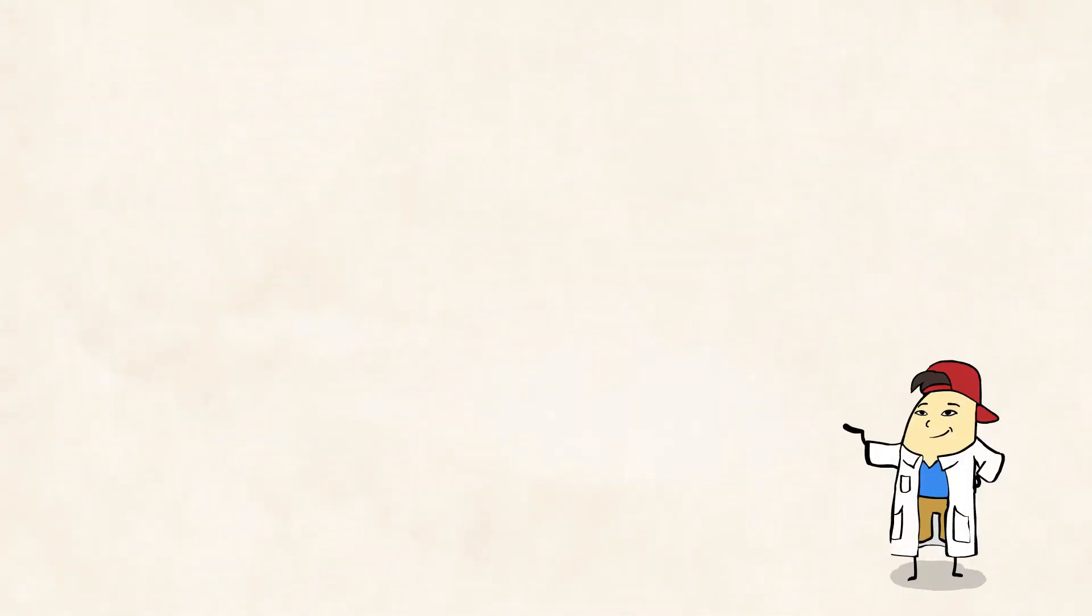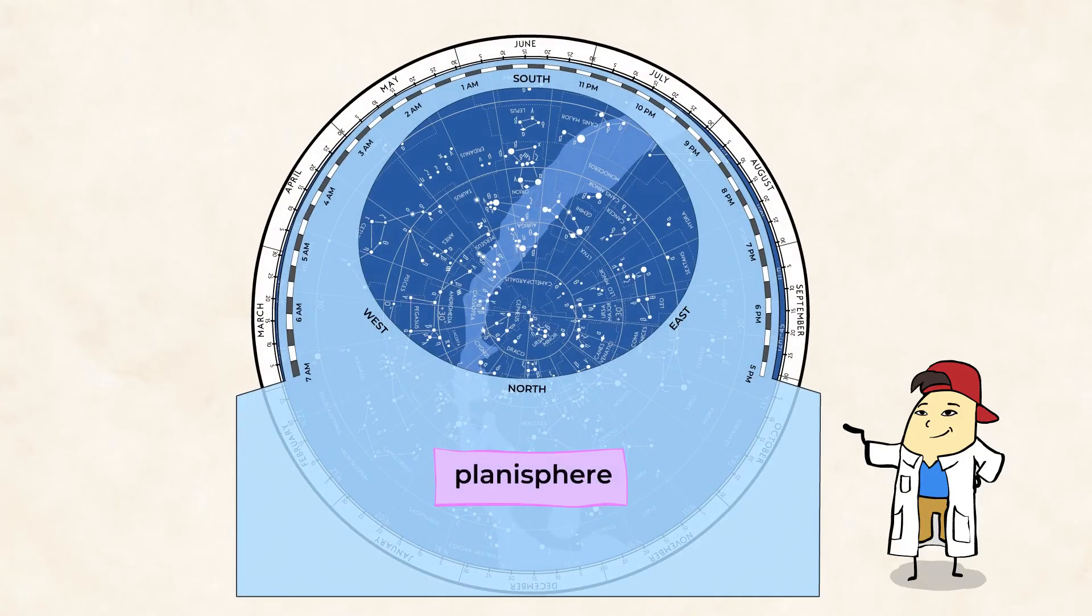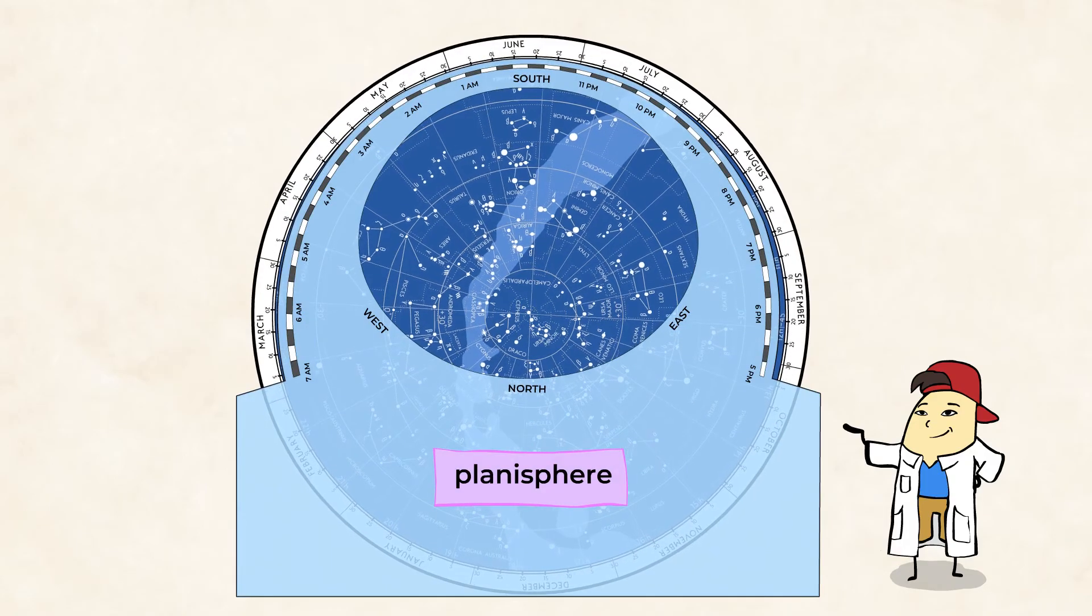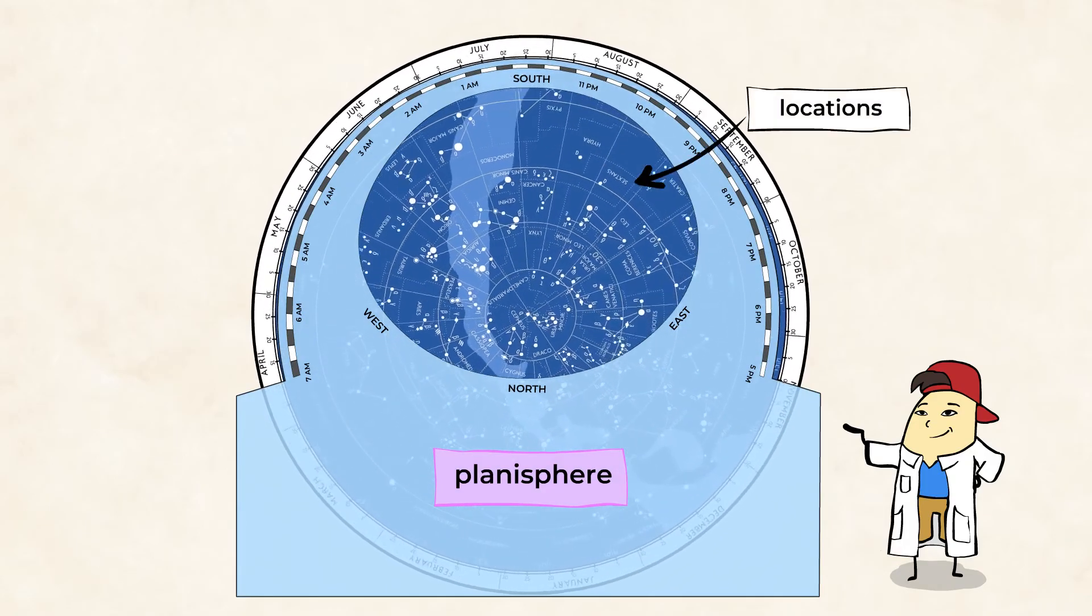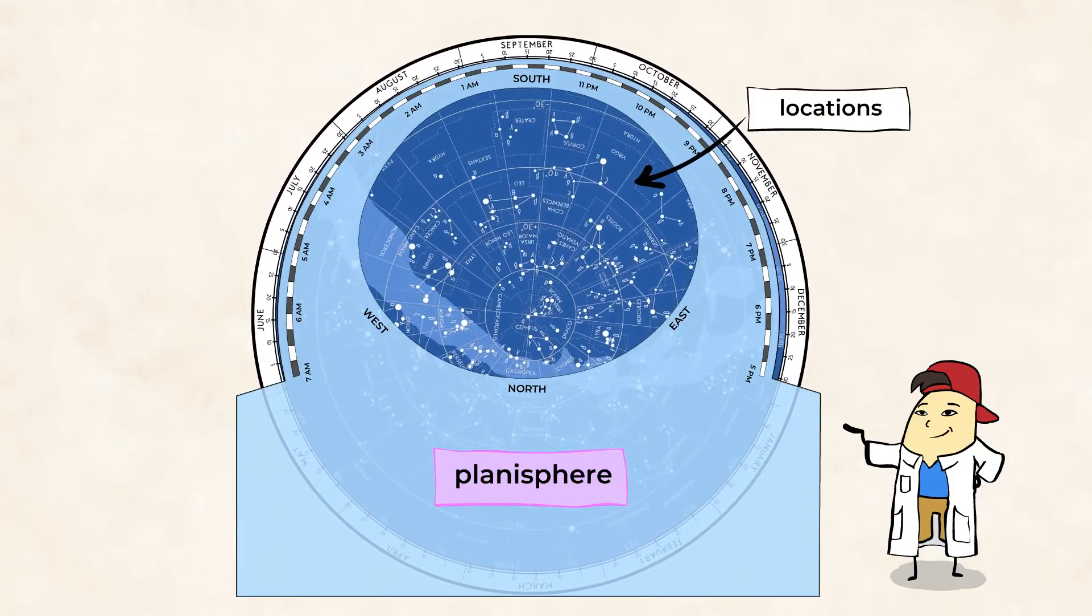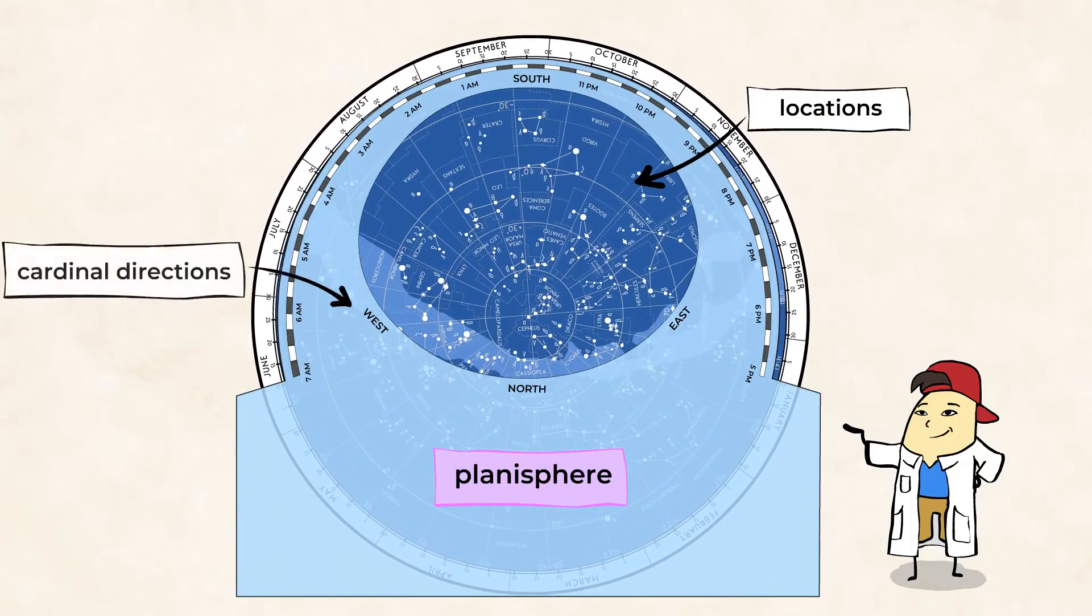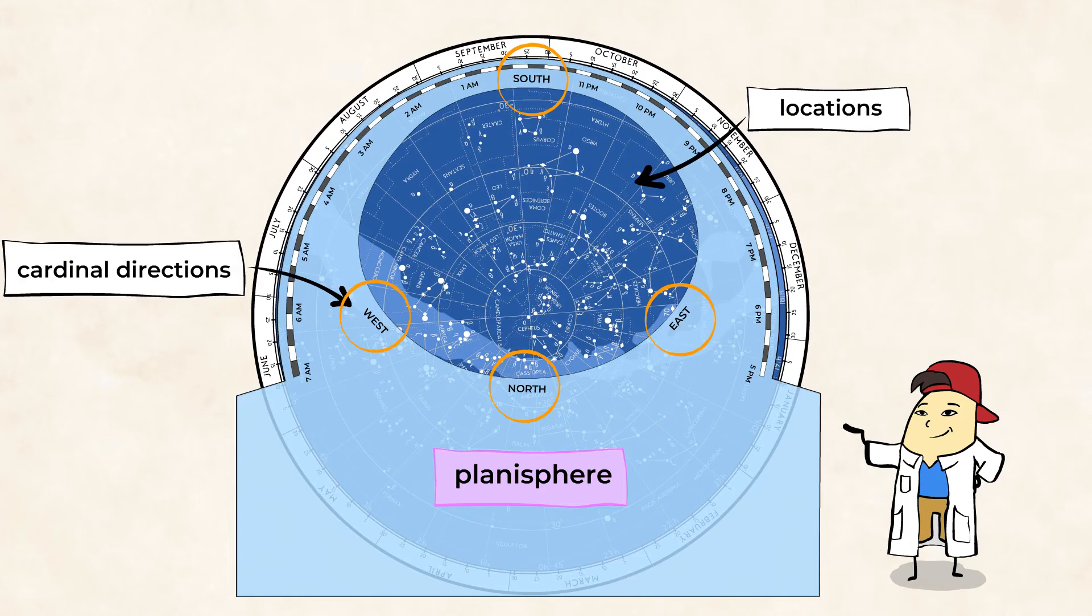Now, to find these stars, we can use a tool called a planisphere. Sounds so cool, right? Let's take a look at how it works. This adjustable chart is used to display the location of stars at different times of the year. Using cardinal directions, this instrument displays what the night sky looks like at various times. Pretty cool.